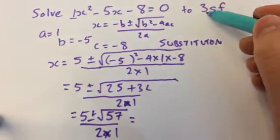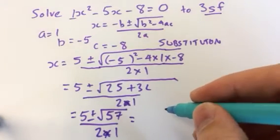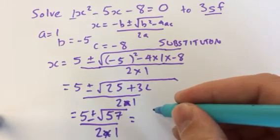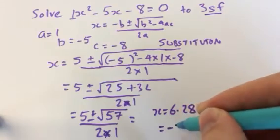Okay, and it's a calculator paper, because they've asked to three significant figures. So we can use a calculator, and we get two values: x equals 6.28 or minus 1.27.